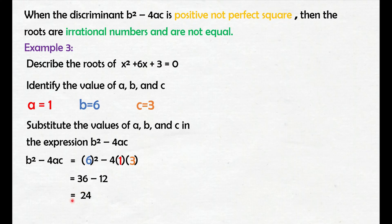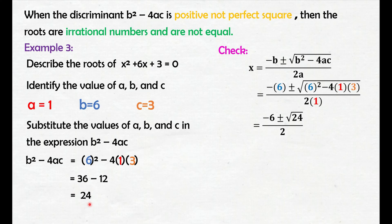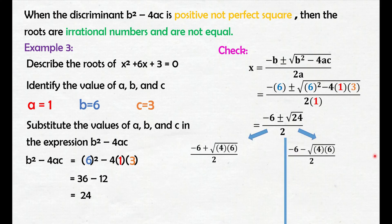By this discriminant, alam na natin na yung magiging roots or solutions ng x squared plus 6x plus 3 equals 0 ay irrational numbers and are not equal. I-check natin by using the quadratic formula. Substitute natin yung mga given values: si b ay 6, si a ay 1, at si c ay 3. Simplify: negative times 6, that is negative 6. Yung discriminant natin is 24. Separate natin yung positive sa negative. Finactor natin si 24 as 4 times 6 para masimplify — merong factor si 24 na perfect square, which is 4.